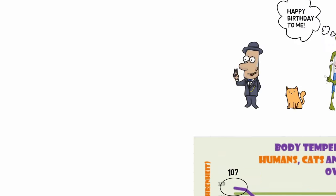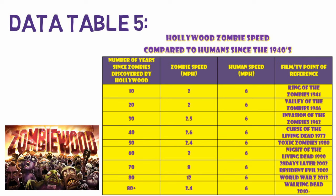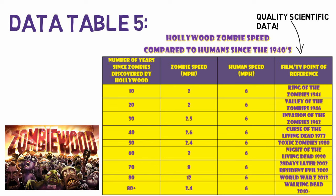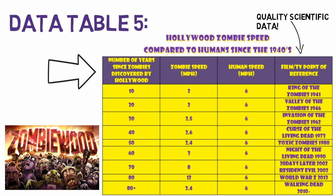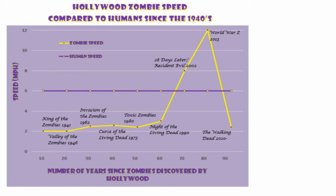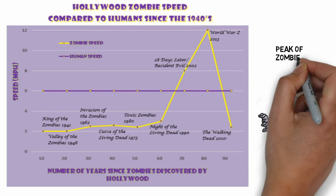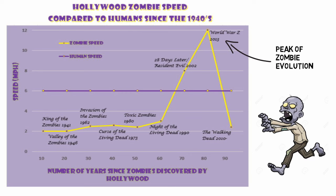One last example — data table 5: Hollywood zombie speed compared to humans since the 1940s. Stare at the data table and look at the trends in speed of zombies over time, and decide should this information be best placed into a bar or line graph. The number of years since zombies were discovered by Hollywood is one variable divided up, so the proper graph for this type of data would be a line graph. Graphing this data also helps scientists easily see how zombie speeds have changed over time in comparison to human speed, which has remained relatively constant.